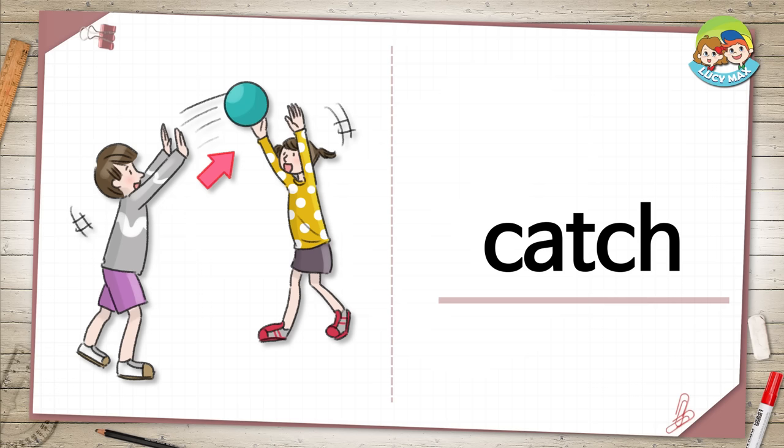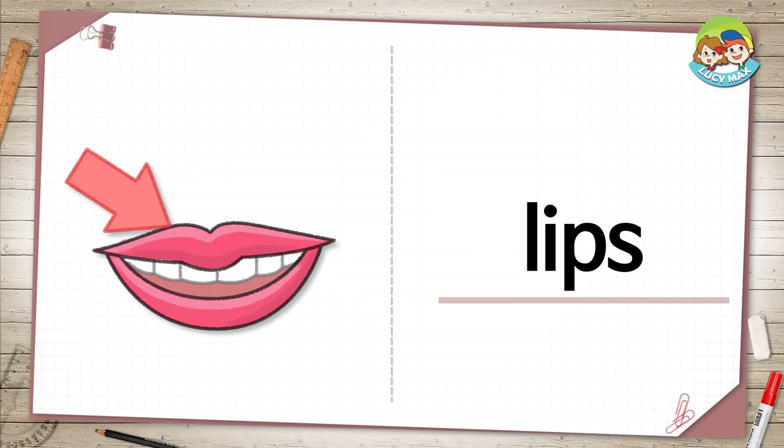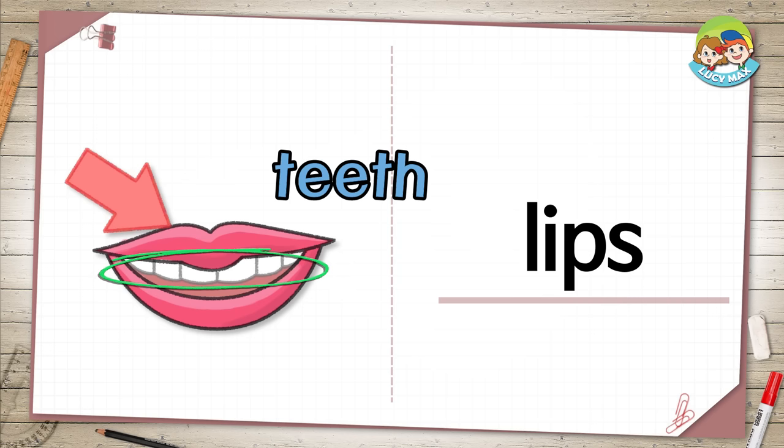Lips. In the picture, you see a mouth. The pink parts are lips. The white parts are teeth. What color are your lips?